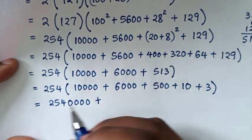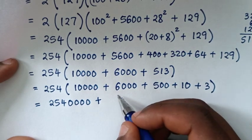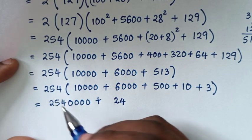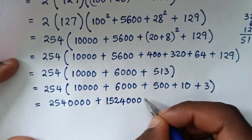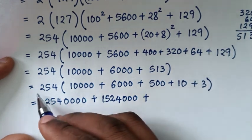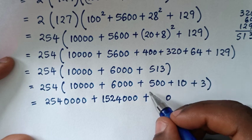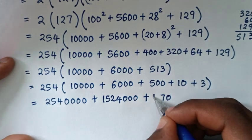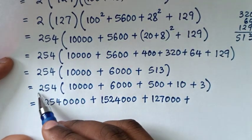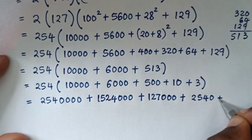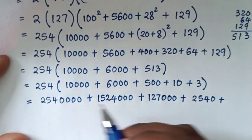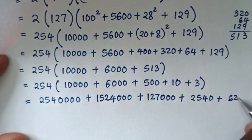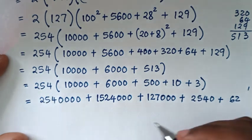Now multiplying: 6 times 4 is 24, carry 2; 6 times 5 is 30 plus 2 is 32, carry 3; 6 plus 2 is 12, plus 3 is 15. Then 5 times 4 is 20, carry 2; 5 times 5 is 25 plus 2 is 27, carry 2; 5 times 2 is 10 plus 2 is 12, giving two zeros. Then 254 times 10 is 2540. And 3 times 254: 3 times 4 is 12 carry 1, 3 times 5 is 15 plus 1 is 16 carry 1, 3 times 2 is 6 plus 1 is 7, giving 762.